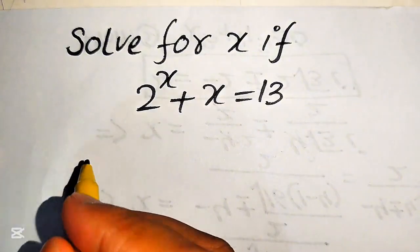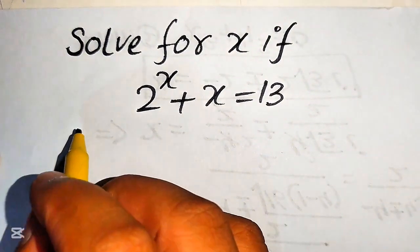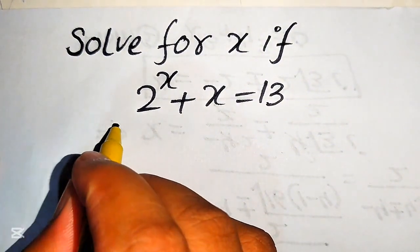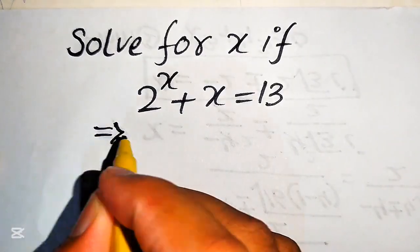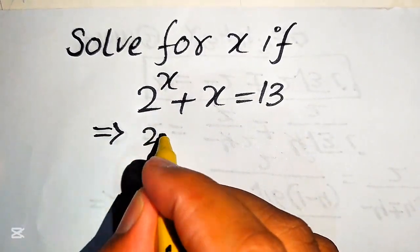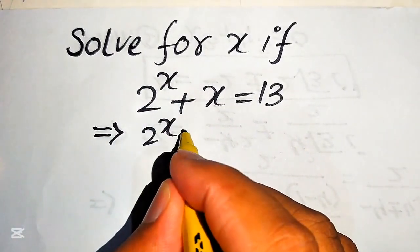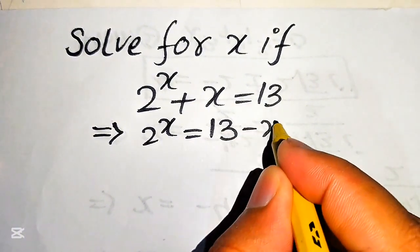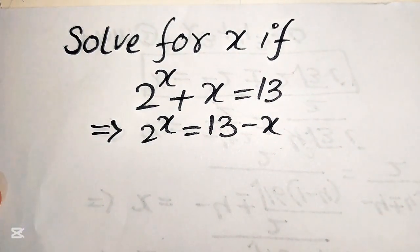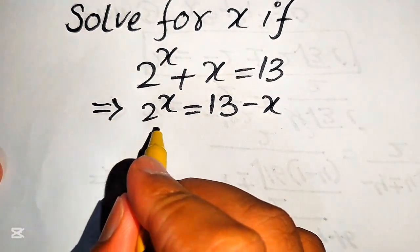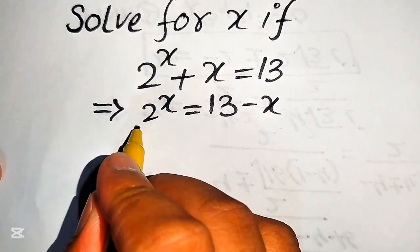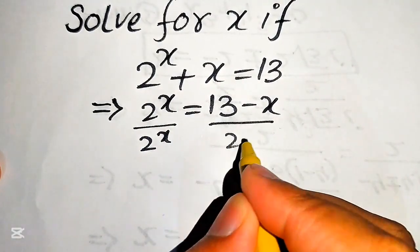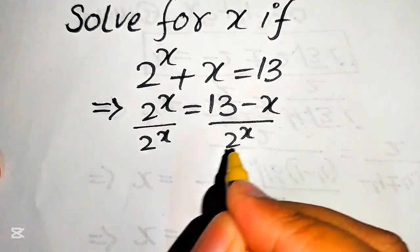The very first step we are going to do is move the term x to the right hand side. It will be written as 2 to the power of x equals 13 minus x. Now we divide both sides by 2 to the power of x.